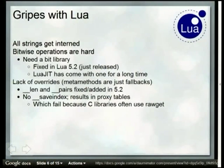A few gotchas with Lua. All strings are interned, so it's very hard to have an actual buffer — if you're getting a buffer from one API and passing it to another, Lua interns it. The FFI fixes that. There's also no bit library built in, which means no bitwise operations, which gets bad when APIs use bit masks. In Lua 5.2 they did bring out the bit library, which fixed that, and LuaJIT has had one built in for a long time.